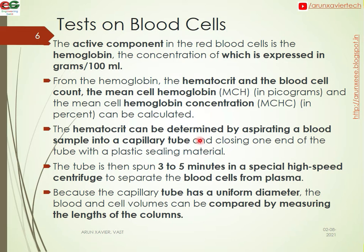The hematocrit can be determined by aspirating a blood sample into a capillary tube and closing one end with a plastic sealing material. This tube is spun for 3 to 5 minutes in a special high-speed centrifuge to separate the blood cells from the plasma. Because the capillary tube has a uniform diameter, the packed cell volume can be determined by measuring the length of the column.